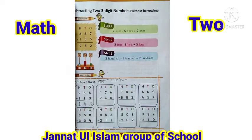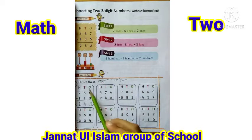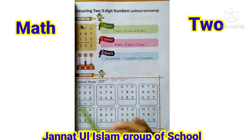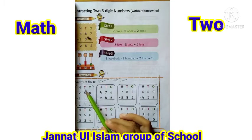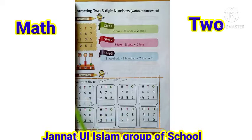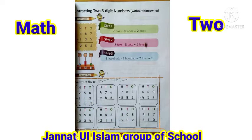تو دیکھیں بیٹا، یہ تھا ہمارا question: ہم نے ones والوں میں سے ones والوں کو minus کیا، tens والوں میں سے tens والوں کو minus کیا، اور hundreds والوں میں سے hundreds والوں کو minus کیا۔